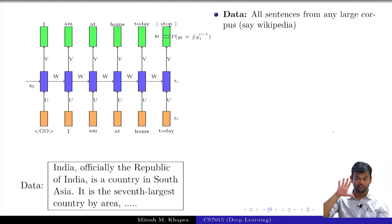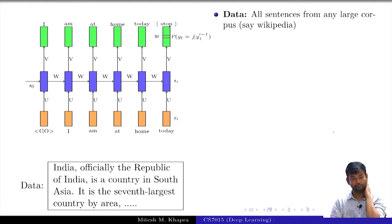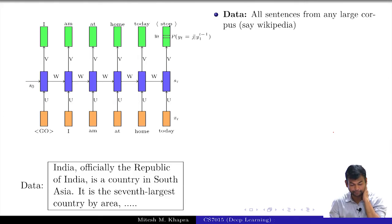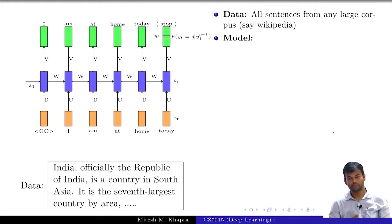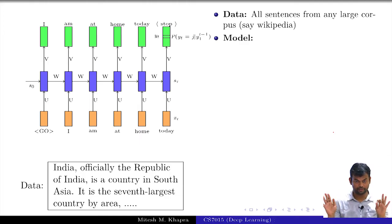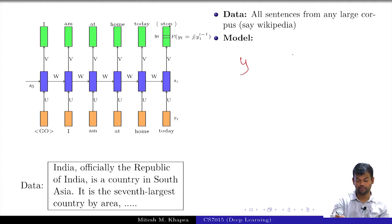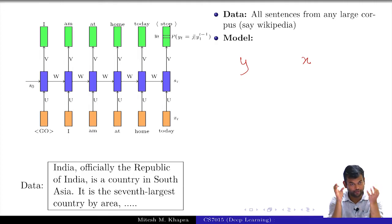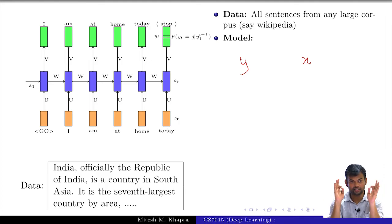Now let us look at the five things in a typical supervised machine learning setup: data, model, parameters, objective function, and learning algorithm. What is the model here? You are trying to model a probability distribution. Your y is a probability distribution and your x is the input given to you. In this course, whatever y and x are, we are always interested in finding the function f.